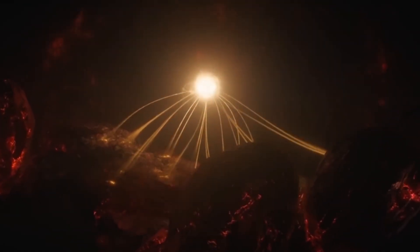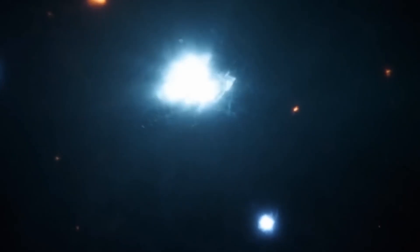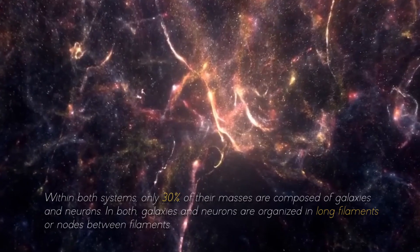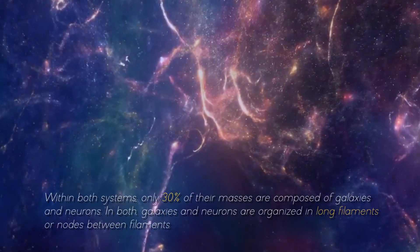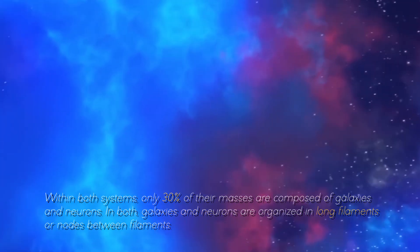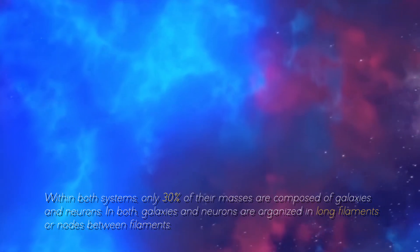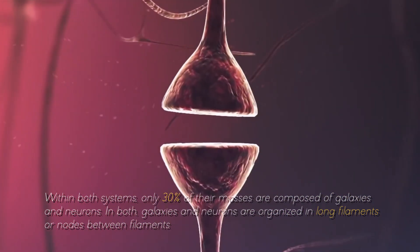Thus, it is not that our brain is like a universe, or that the universe is a brain of titanic proportions, but that their dynamics are similar. Within both systems, only 30% of the masses are composed of galaxies and neurons. In both, galaxies and neurons are organized in long filaments and nodes between filaments.